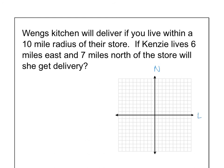And let's just say Weng's Kitchen is right there at the center. Okay, and Kenzie lives six miles east, seven miles north. So that's going to be one, two, three, four, five, six, one, two, three, four, five, six, seven. That's going to be right up here, I think. Six to the east and seven north. And we want to figure out, will she get free delivery?